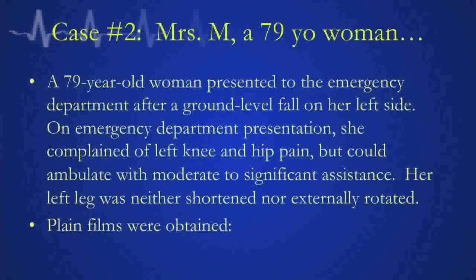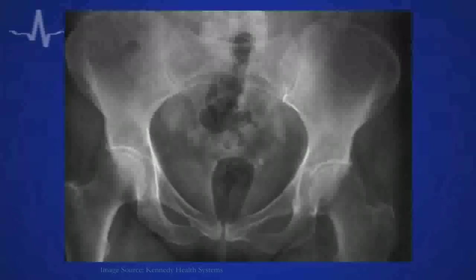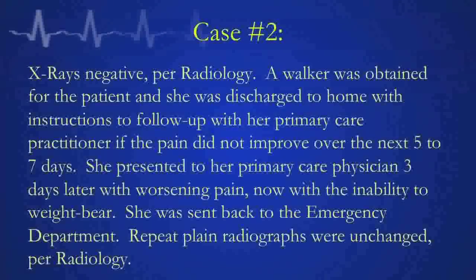Second case: a 79-year-old woman presented to the emergency department after a ground-level fall on her left side. She complained of left knee and left hip pain but could ambulate with moderate to significant assistance. Her left leg was neither shortened nor externally rotated. Plain films were obtained and the X-rays were negative per radiology. A walker was obtained and she was discharged home with instructions to follow up with her primary care physician if there was no improvement within the next week. The pain didn't get better.